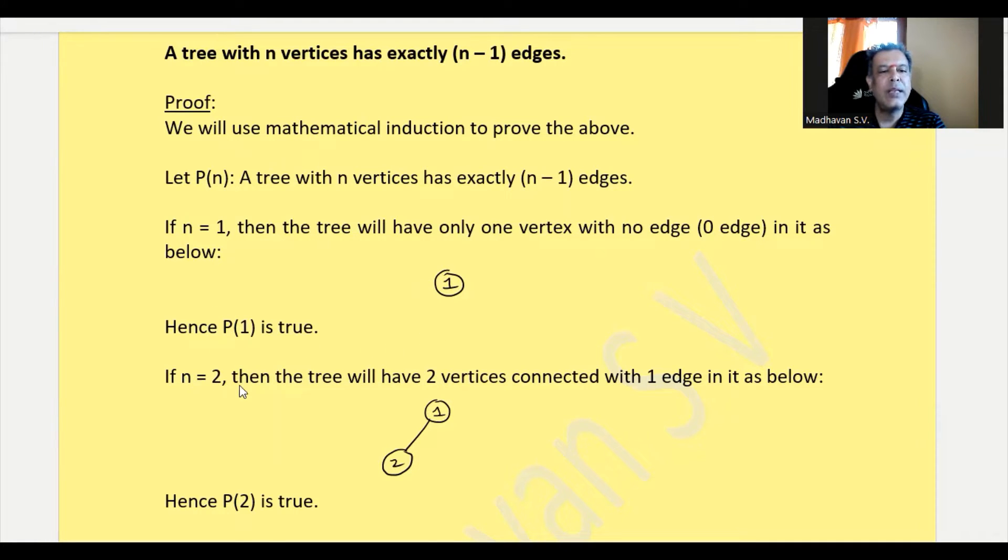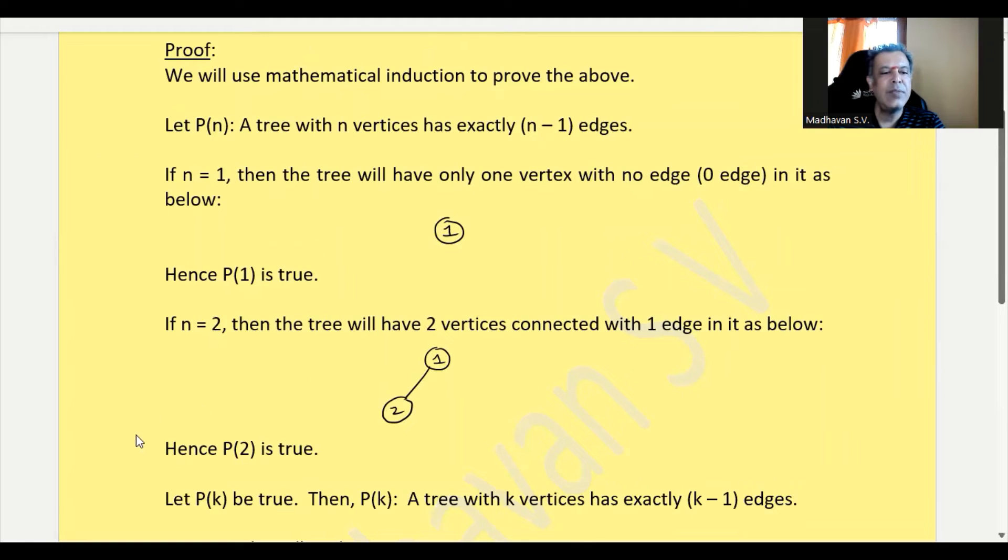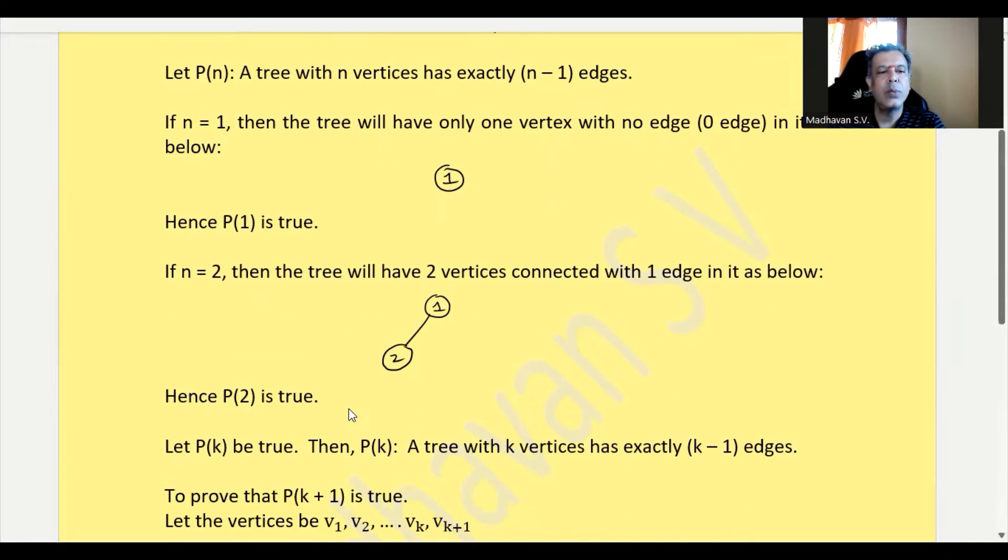Suppose if n equal to 2, then the tree will have two vertices. And those two vertices will be connected with one edge because it is a tree. There will be a connection between vertices and it will not have any cycle, which means two vertices and one edge. So P of 2 is also true.